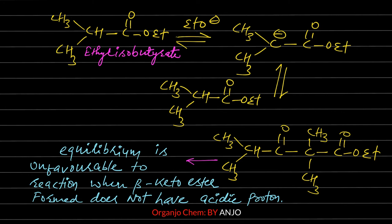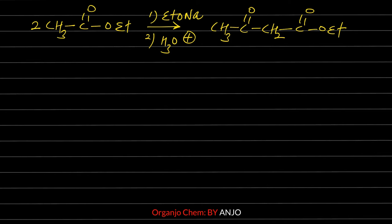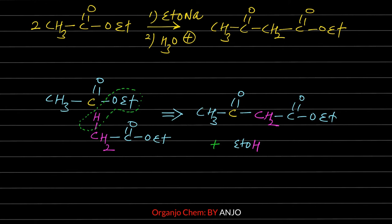For a short trick to find the Claisen condensation product: in this two-step reaction, two identical ester molecules are used to form a beta-keto ester. Arrange both ester molecules so that one loses its OEt (or OMe) group and the other loses one alpha hydrogen from its alpha carbon. Remove the alcohol as a side product and form a new C–C bond between these two carbons to get the final beta-keto ester.